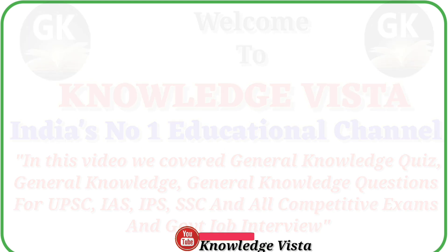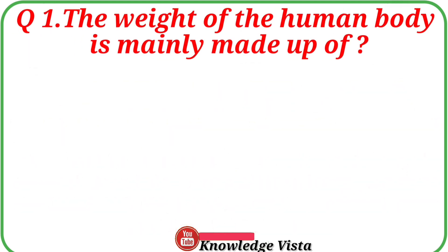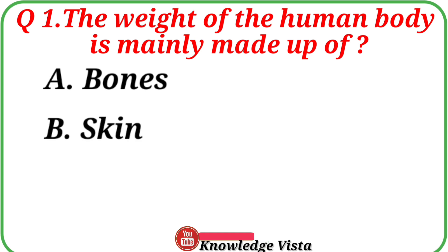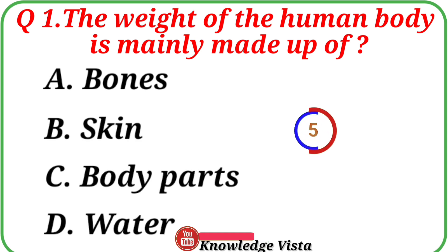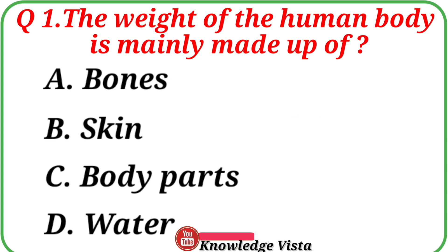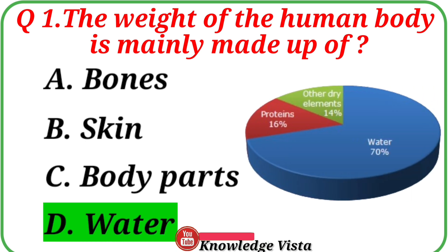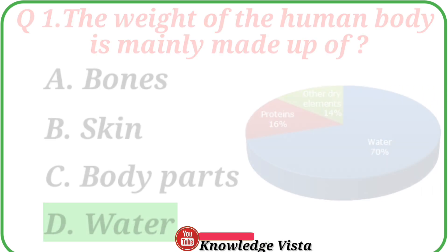Let's start this video. Question number 1: The weight of the human body is mainly made up of. Your options are: A. Bones, B. Skin, C. Body parts, D. Water. Correct answer is option D, Water. Water contributes to the maximum weight of the human body.